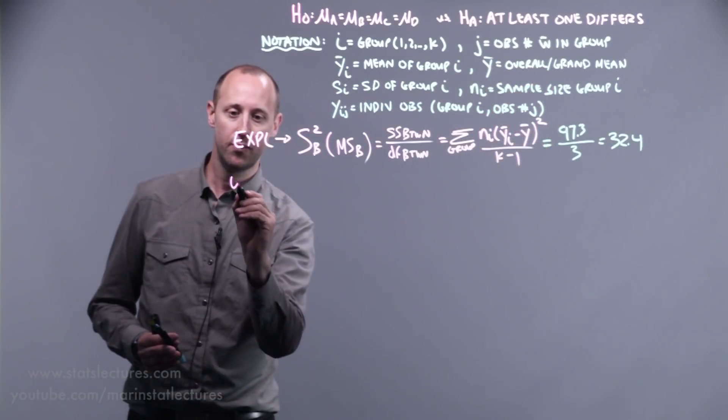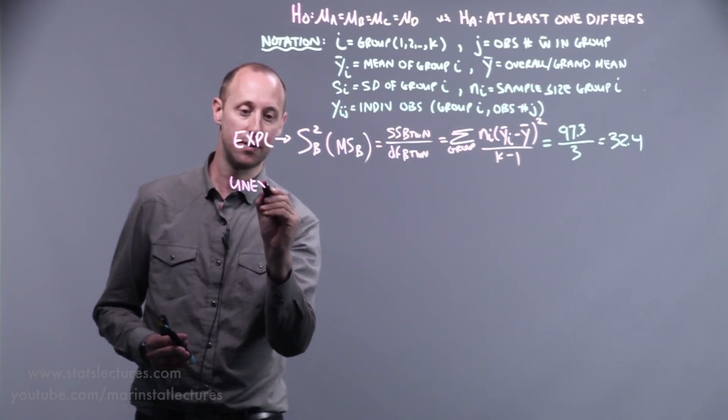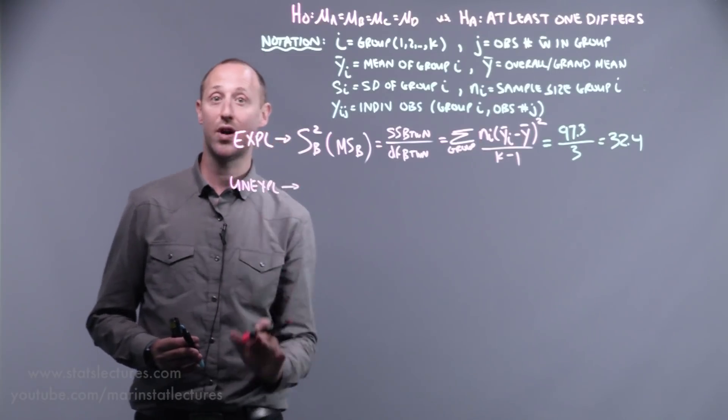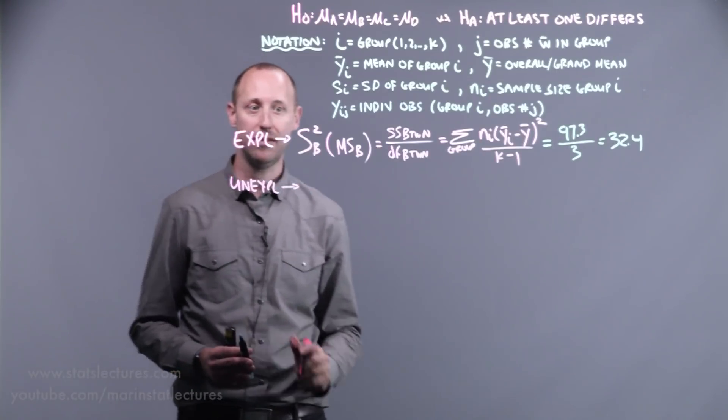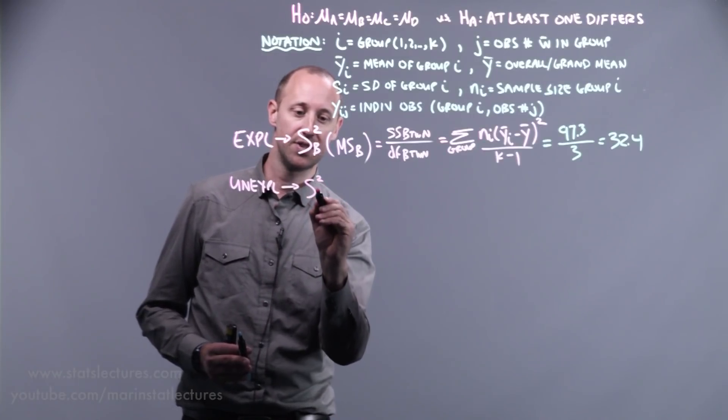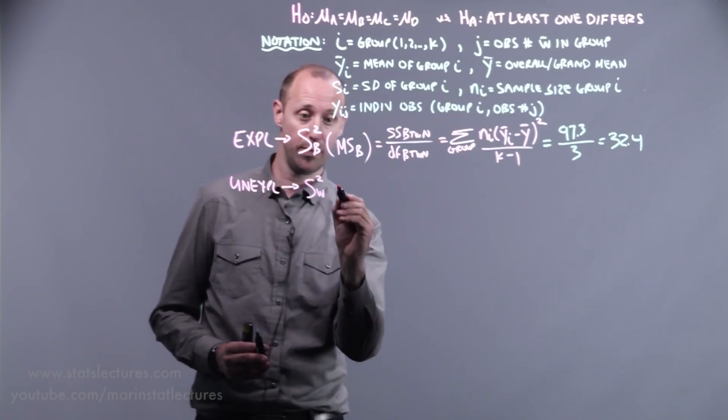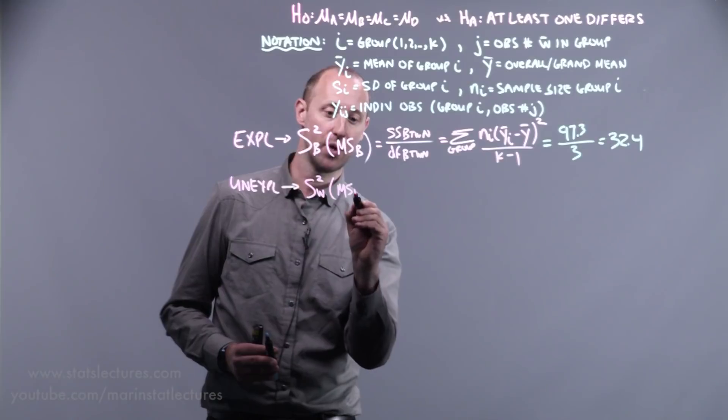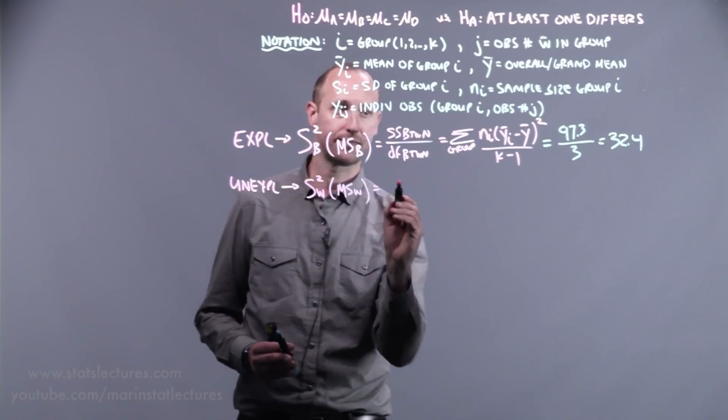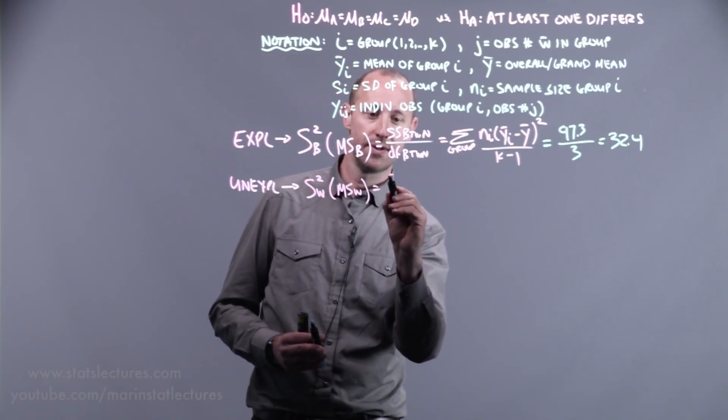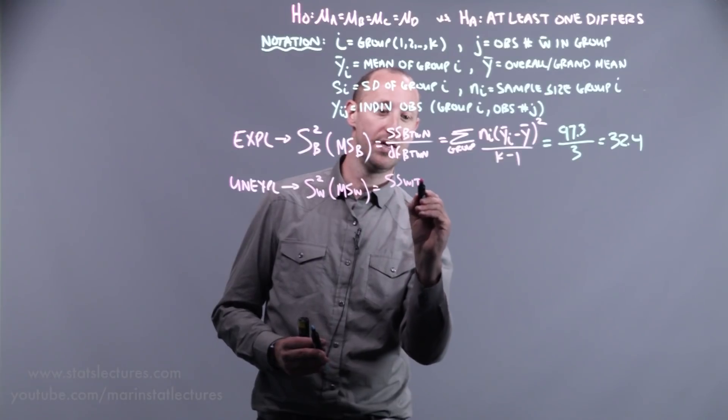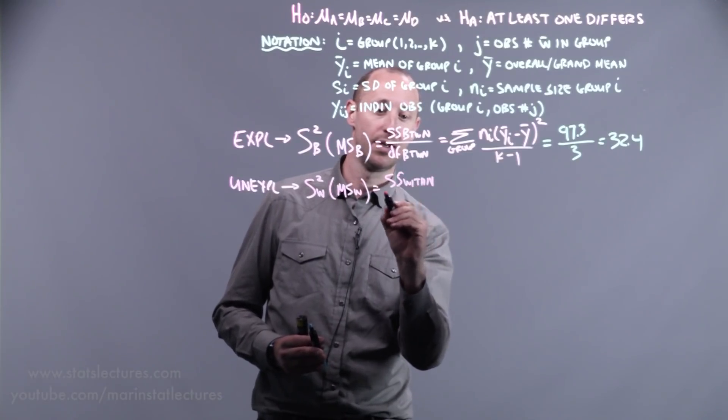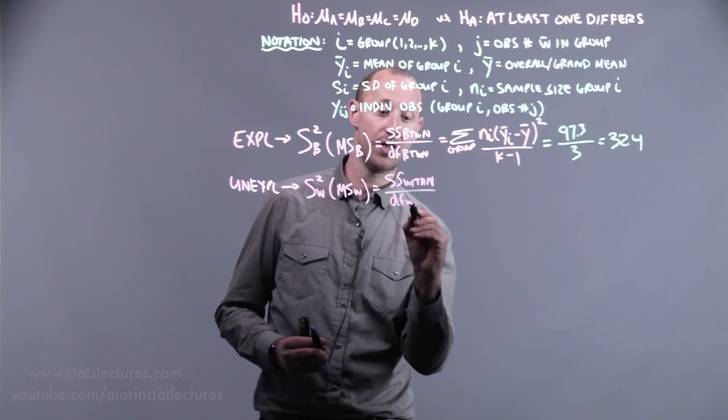We also saw we can think of the unexplained, and this is the variability that's not explained by diet, or not explained by x. So this is the variability going on within a group, or the mean square within. And this is the sum of squares within groups, divided by the degrees of freedom within.